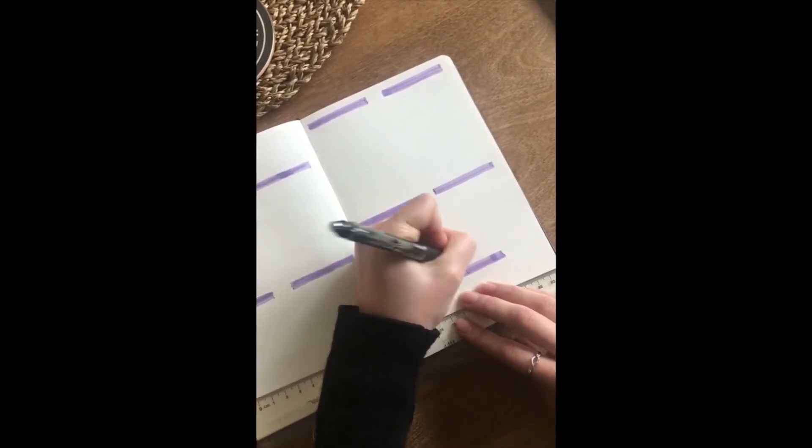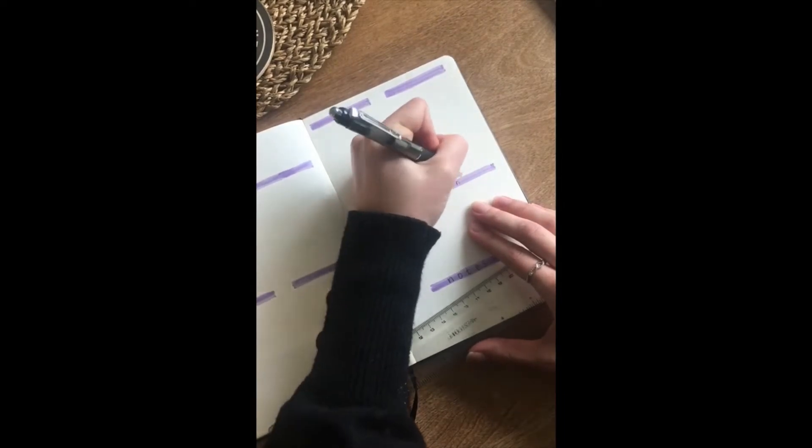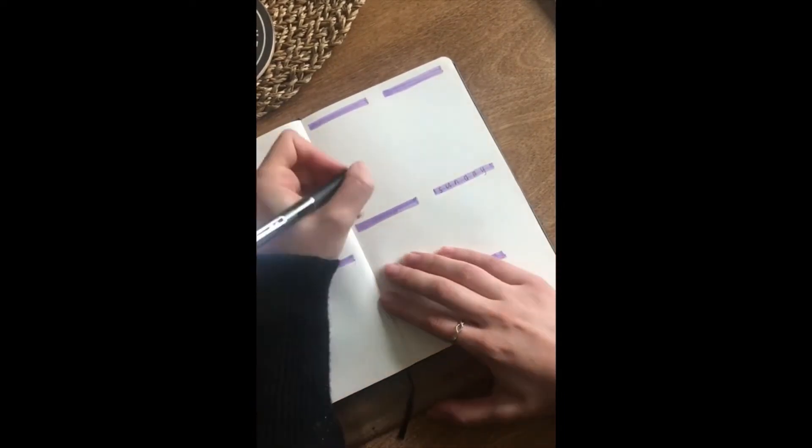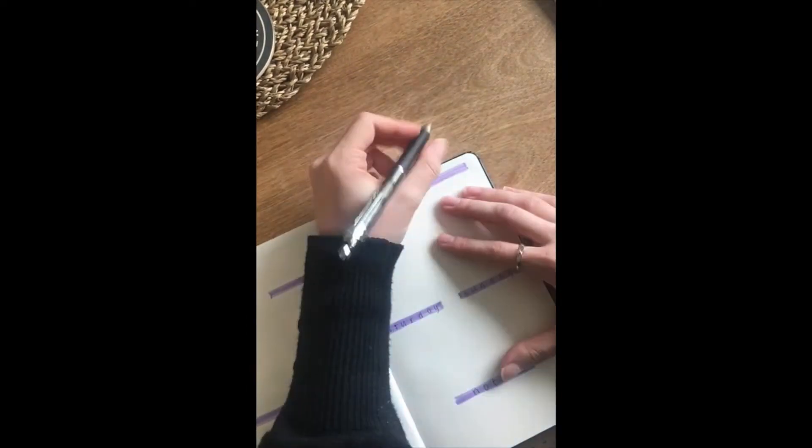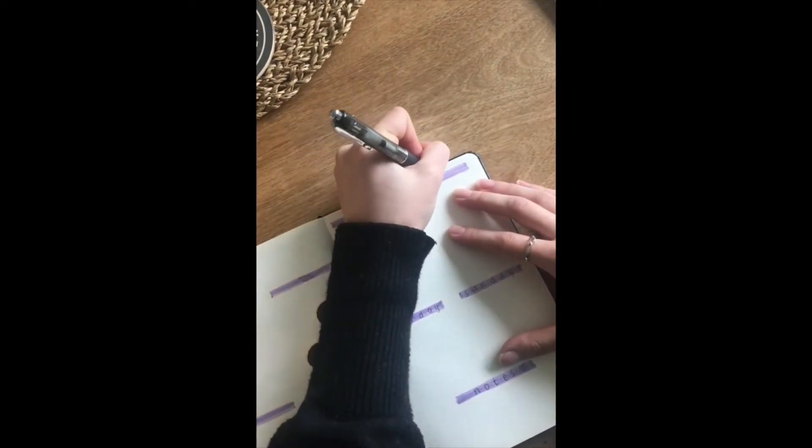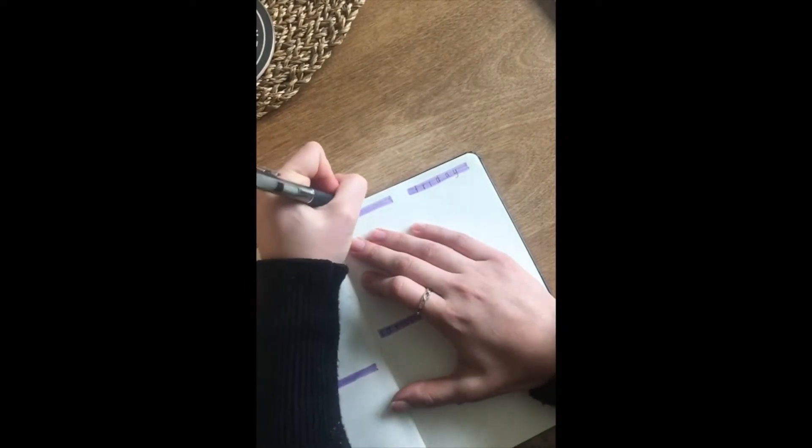So once your lines are done, write each day of the week on the lines. I work backwards, so that's why you see me starting on Sunday. The bottom line is for notes, and the first line on the left page is for 'this week,' and you'll see that in a second.